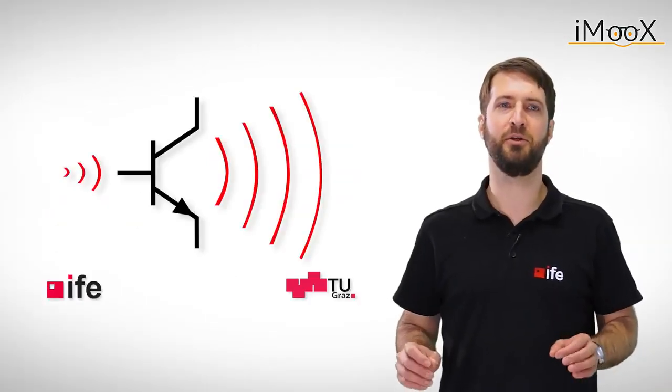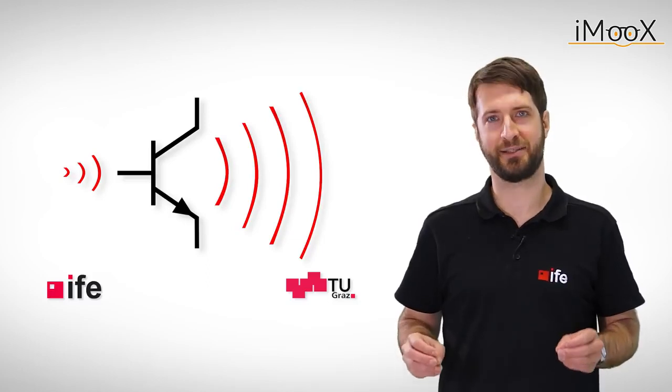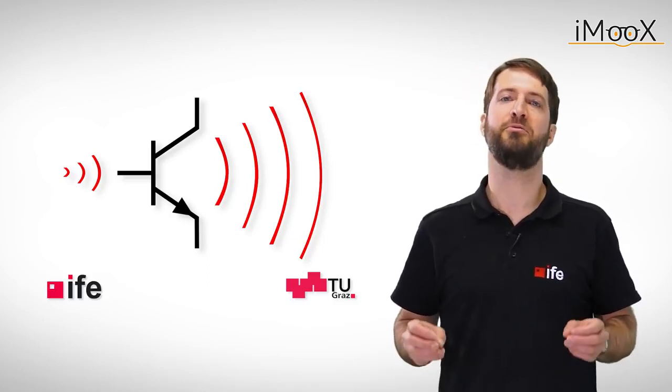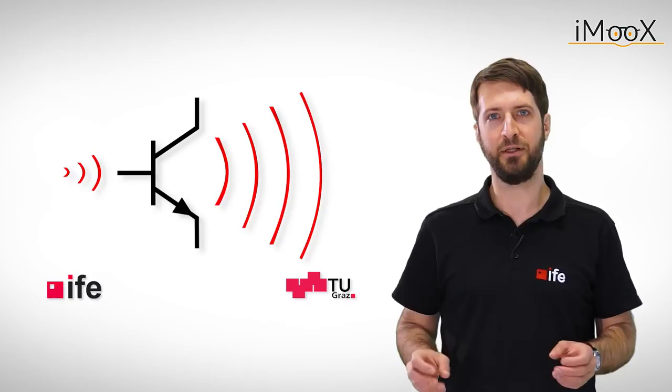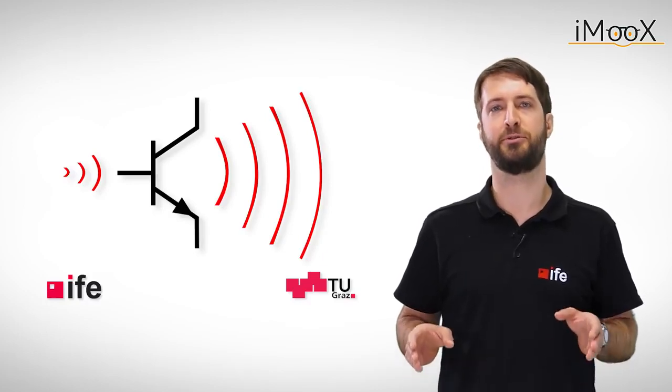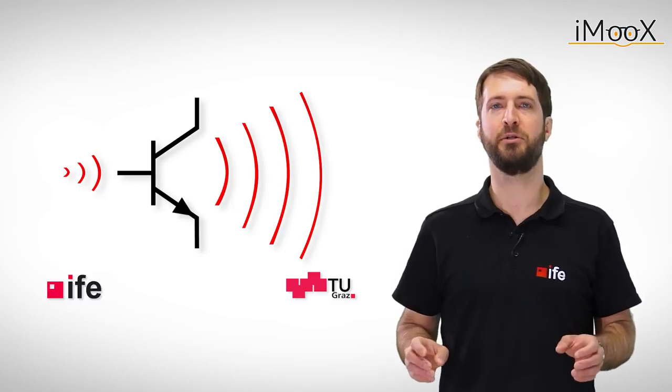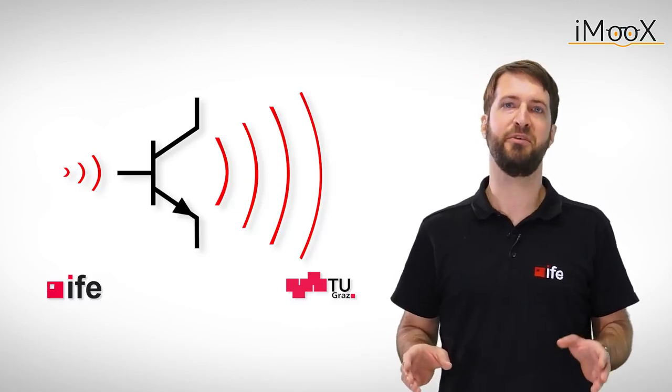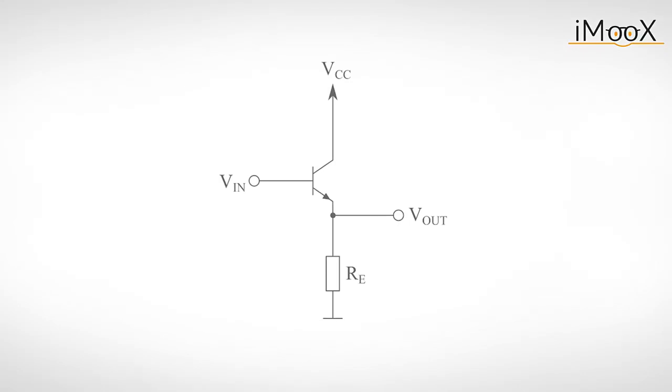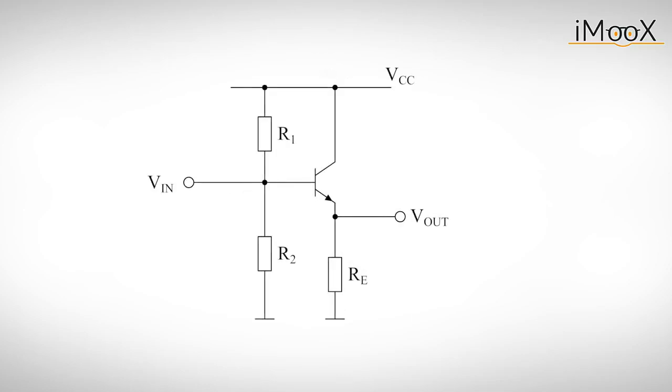Now we are going to have a closer look at an actual design example of an emitter follower for audio signals. In general, the frequency of audio signals range between 20 and 20,000 Hz. A typical supply voltage for such a circuit would be 15 volts. We start with our basic circuit from before. First, we get rid of the additional source for the input voltage. Instead, we are only going to use one supply voltage and a simple voltage divider for biasing.